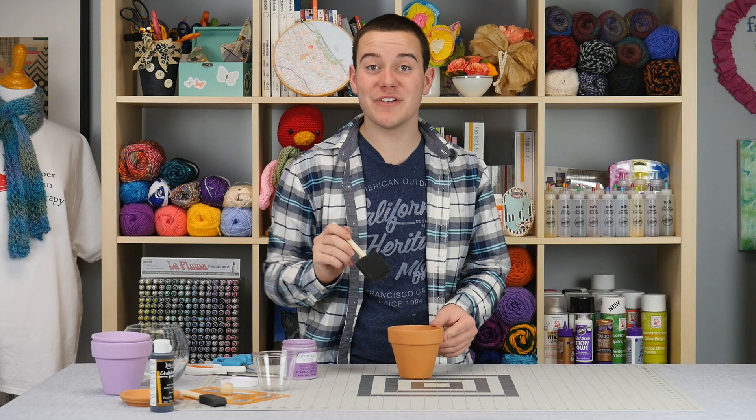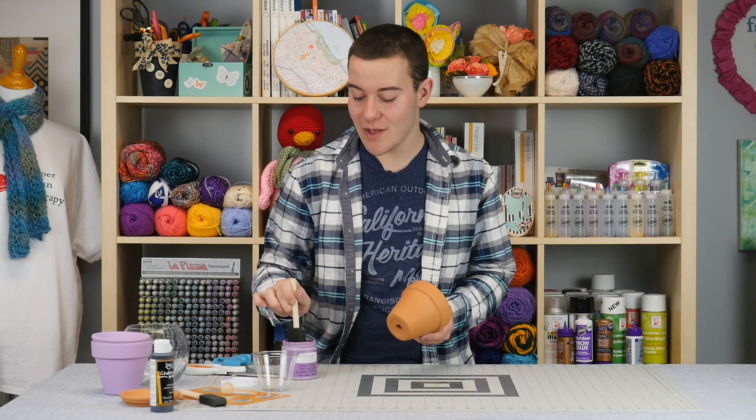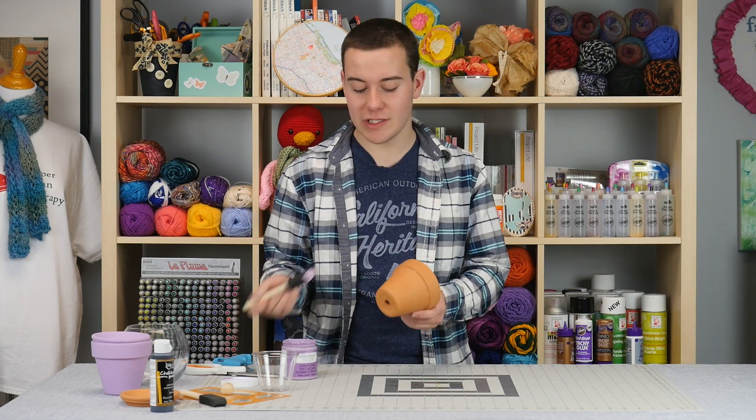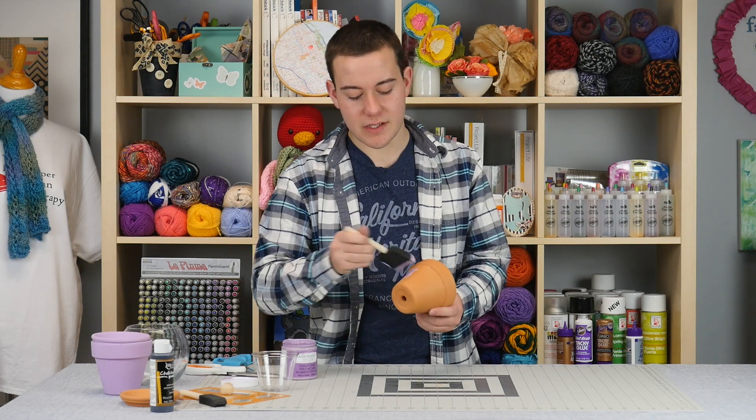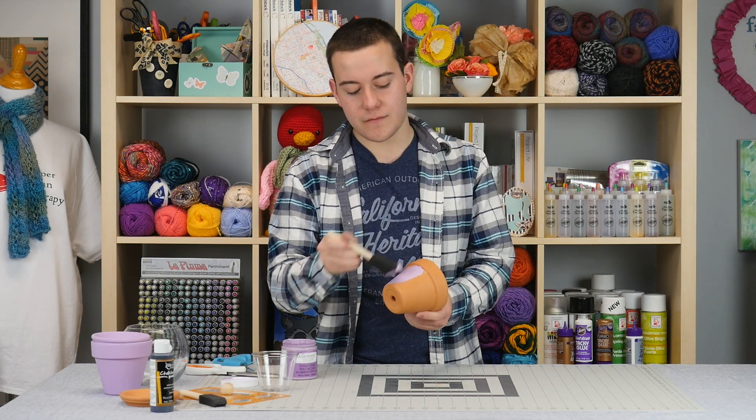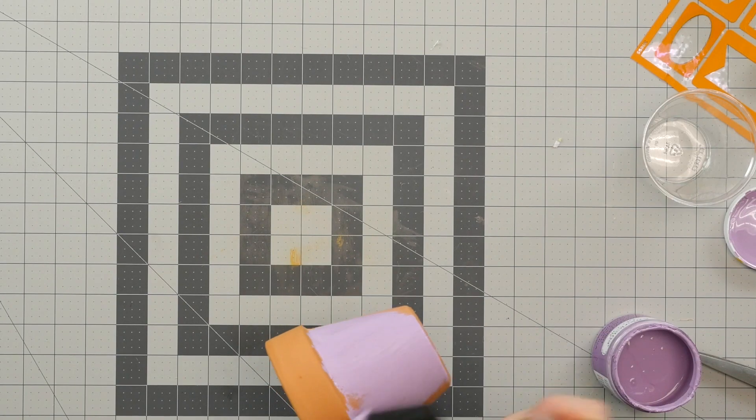The first thing that we're gonna do for today's project is we're gonna paint our terracotta pieces with a nice chalky finish purple. This will be a great Mother's Day gift. So you want to apply a nice coat of chalky finish paint onto your terracotta.